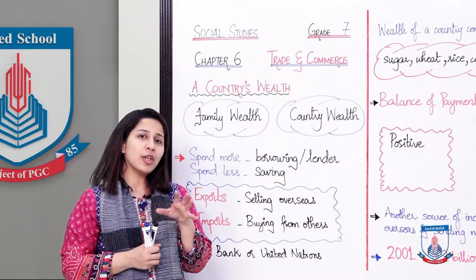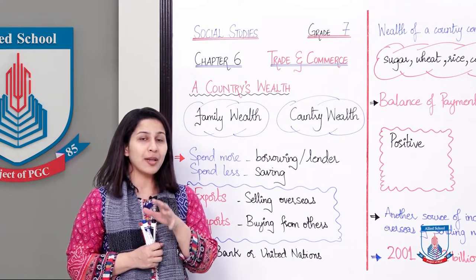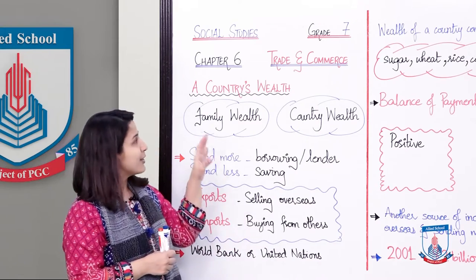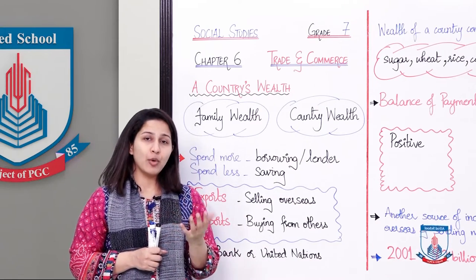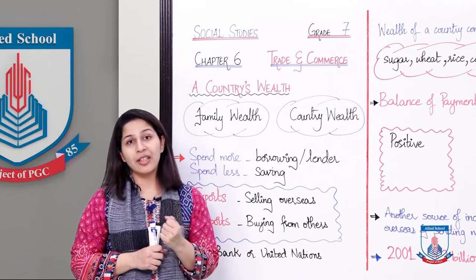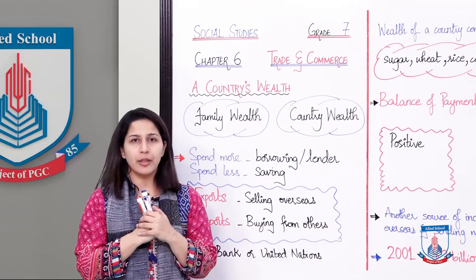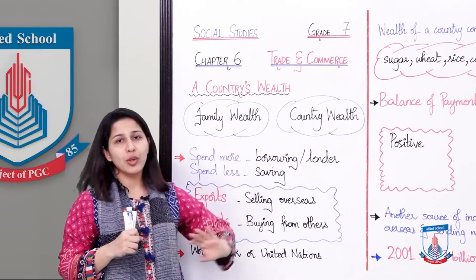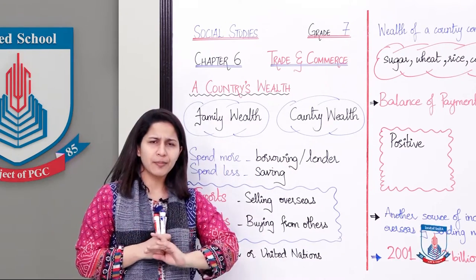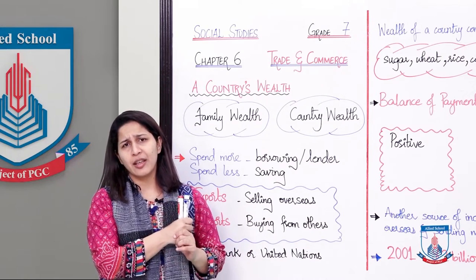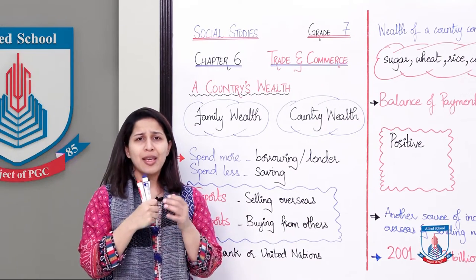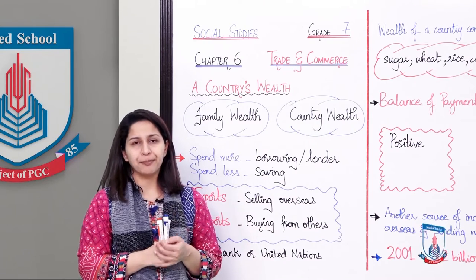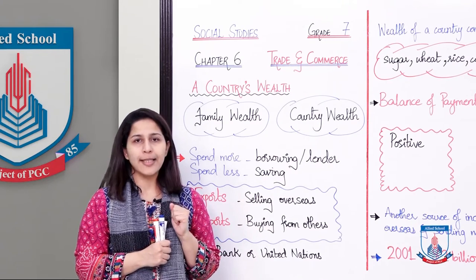Now, if you consider trade and commerce with respect to a country — agar ek mulki torpe dekha jaye — to what is a country's wealth? Ek mulk ki apni daulat kya hai? Iske liye example lete hai. A family's wealth is similar to a country's wealth. Ab now, you might be thinking, kya keh rahi hai? Ke ek family ki wealth aur ek country ki wealth kaise similar hai? Let's take a look.